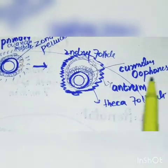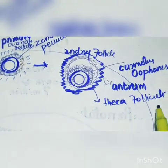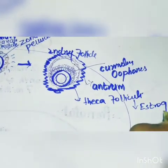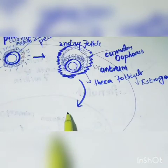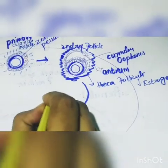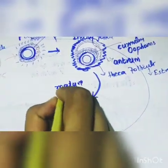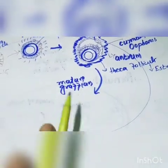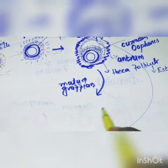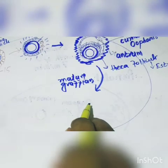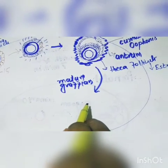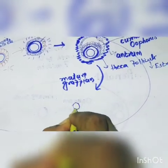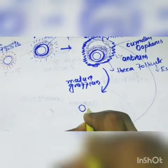The theca cells start producing estrogen. Now this secondary follicle is converted into a mature follicle or Graafian follicle. There is only one Graafian follicle. In the mature follicle, the primary oocyte completes its first meiotic division and forms a secondary oocyte.